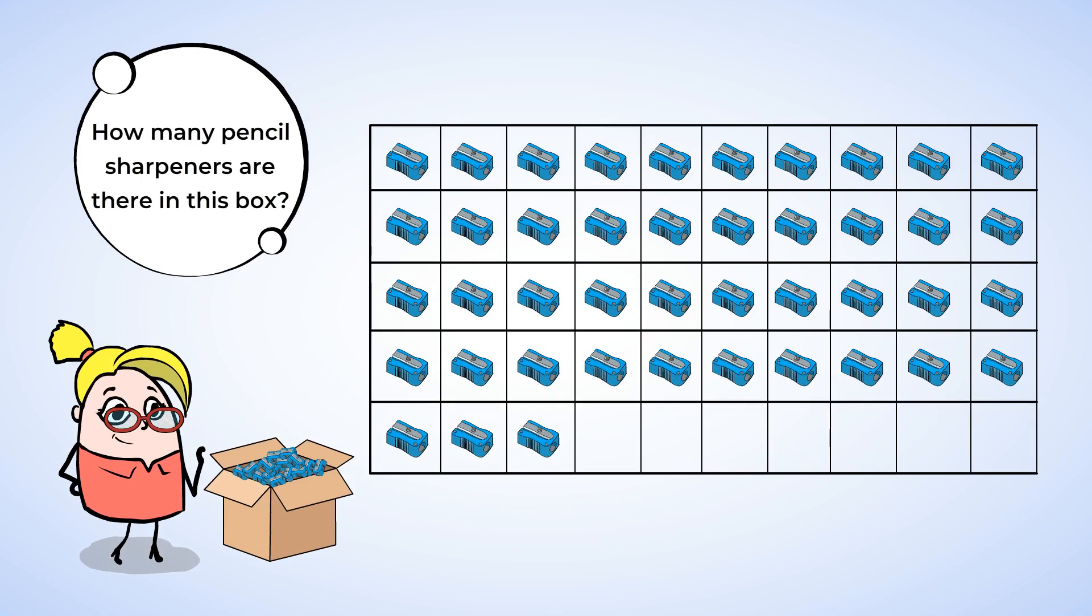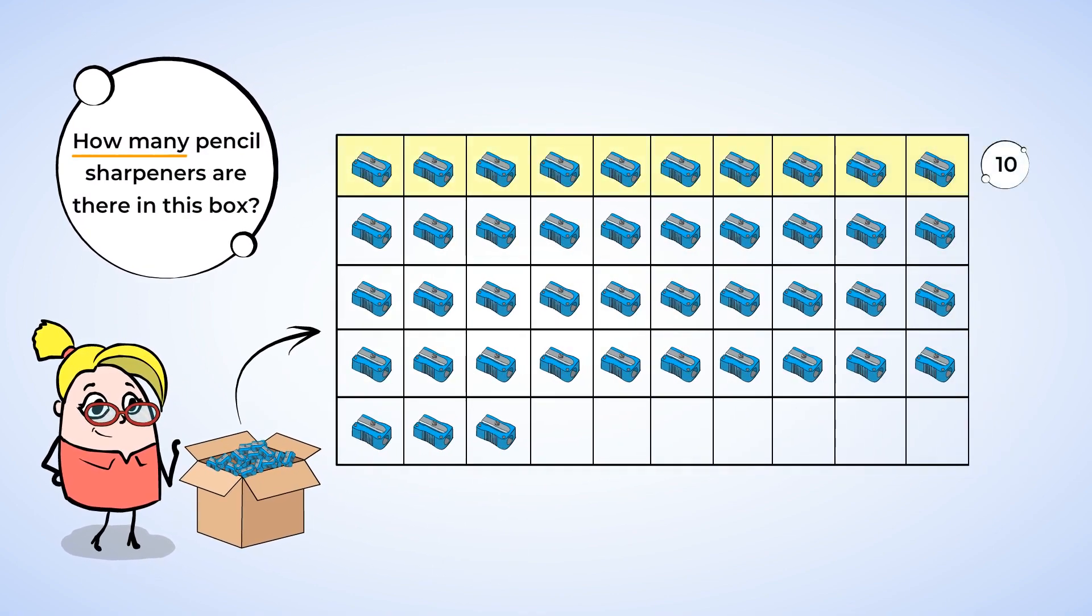can you tell me how many pencil sharpeners are there in this box? Well, there are 10 in each row except for the last row which has only 3. Okay, so let's count by tens first. We'll go 10, 20, 30, 40. So let's write the number 40 and count on the last 3 pencil sharpeners.